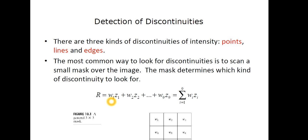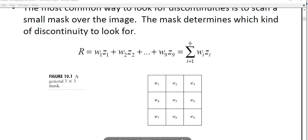You will see in this image that this is the general three cross three mask. We have W1, W2, W3, W4, W5, W6, W7, W8, W9. So R is W1 Z1 plus W2 Z2 up to W and Zn. That is, summation goes from i equals 1 to 9 and WI ZI. So overall, R, that is the region of that image, will be given by summation of this. So this is the general three cross three mask.